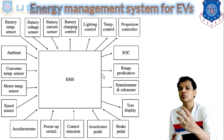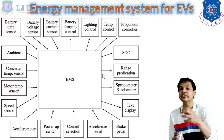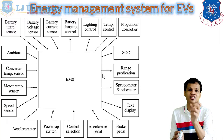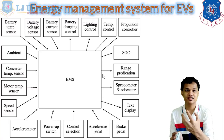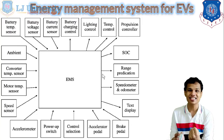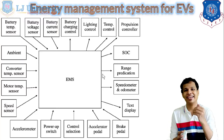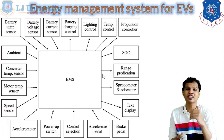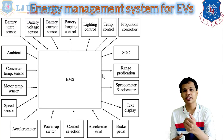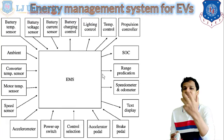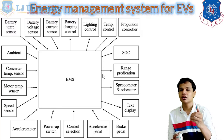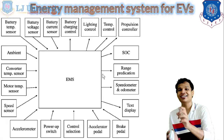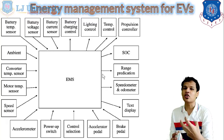SOC stands for State of Charge — the charging state of the battery, indicating how much charge the battery holds and whether additional charging is required. Range prediction gives us an estimate of how far the vehicle can run before the battery needs charging. The speedometer and odometer provide RPM and distance readings based on the speed sensor. Finally, a text display on the dashboard shows any information that needs to be indicated or communicated to the driver.